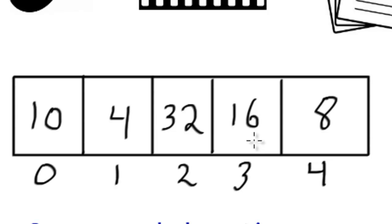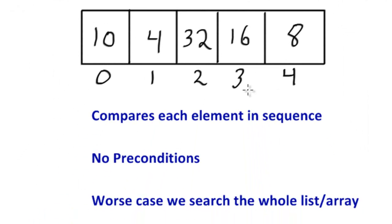One positive aspect of linear search is that it doesn't have any preconditions — no certain requirements before it can perform what it's supposed to do. Some search algorithms do have preconditions. Take, for instance, a binary search algorithm: it requires the list or array to be sorted, so we couldn't perform that particular algorithm on an unsorted list. But that's not the case with linear search. Linear search says we don't care — we don't have any preconditions. It may be the case that the thing we're looking for is not in the array at all, in which case we would have to traverse and compare every single element before finding that out. And in the worst case, it searches through the whole entire array, which could be quite bad.